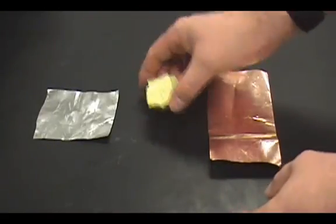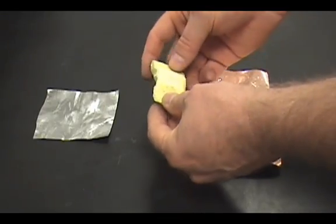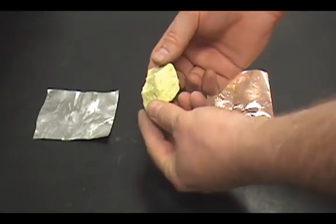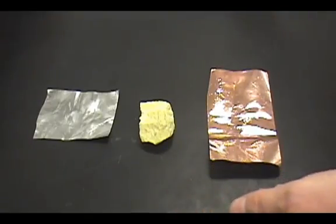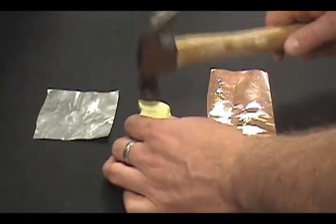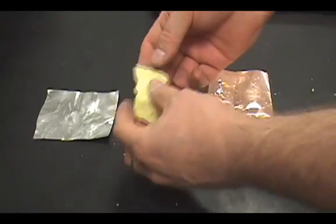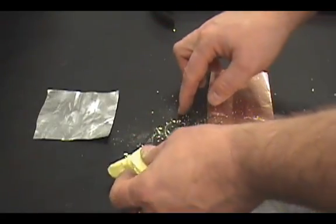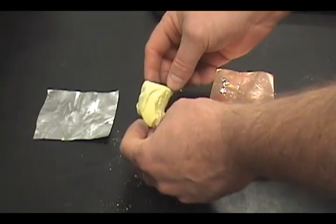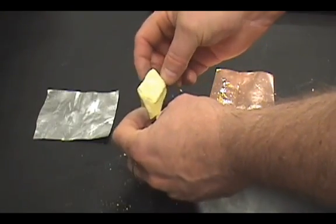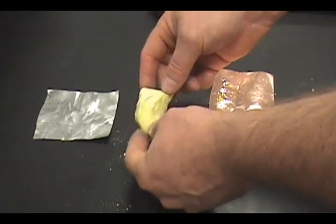And then the physical property of this sulfur is that it's not malleable at all. If I were to take a hammer and give this a tap, you'll see that it doesn't bend, but it actually shatters into little pieces. If I were to hit this piece with a little more force, I would be able to break this piece of sulfur up into much smaller pieces.